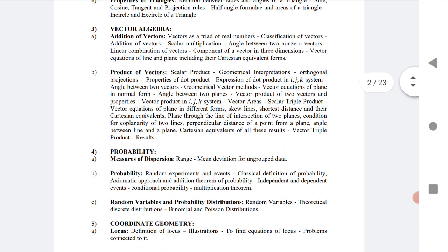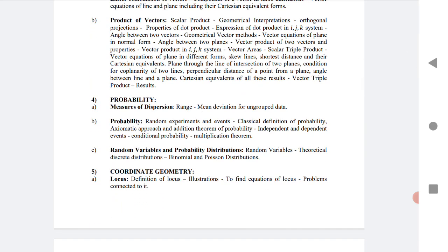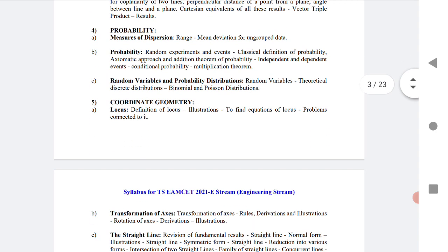Let us go to the next part, probability: measures of dispersion, probability, and random variables. It can give you 5 to 10 questions from this chapter. Coordinate geometry is